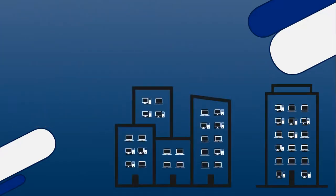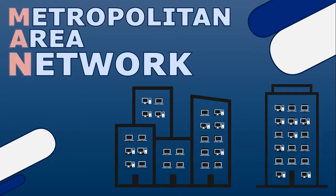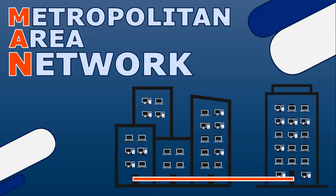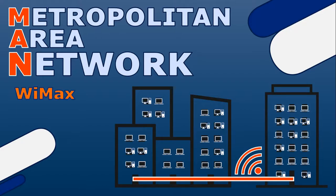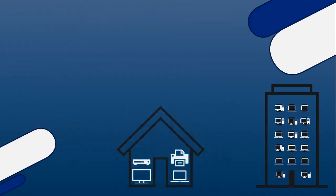Sometimes you have a network spanning multiple buildings that are close together, whether in the same campus, region, or metropolitan area. If it requires multiple buildings, you call this a Metropolitan Area Network, or MAN. Each building has its own LAN, and we link these LANs across different locations into a MAN, enabling communication between various offices, campuses, or facilities. If the buildings are close enough, this can be done using Wi-Fi, WiMAX, fiber optic cables, microwave links, or leased lines for high-speed data transmission.